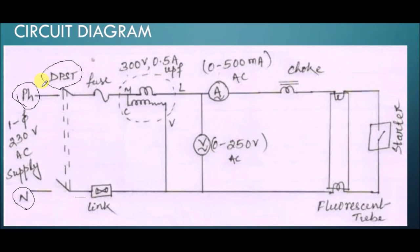When you are going for single phase AC you write one phase and one neutral. But when you're going for three phase supply there may or may not be a neutral — either three phase only: phase R, phase Y, phase B, and sometimes if it is a four wire system then phase R, Y, B with one neutral point.